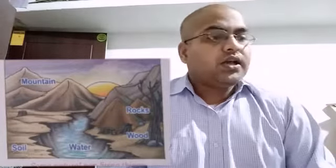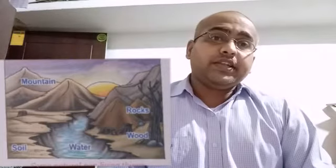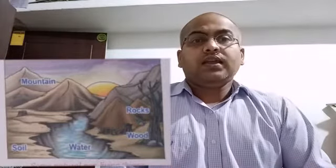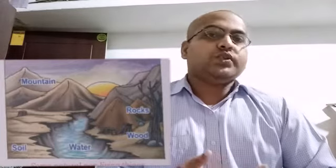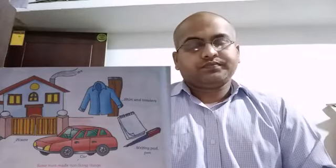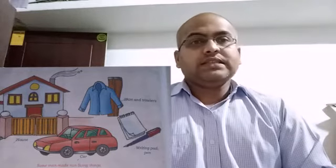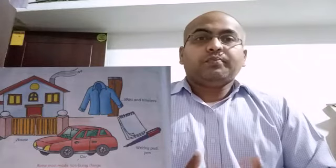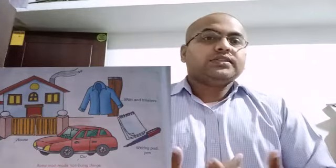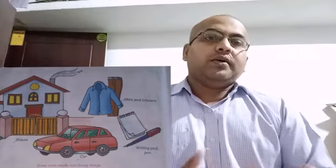Non-living things are of two types: one is natural non-living things and the other is man-made non-living things. Natural non-living things are those things which are already present in nature or made by nature, like rocks, mountains, rivers, sunlight, and soil. Man-made non-living things are those things which are made by humans, like books, pens, pencils, mobile phones, and computers.